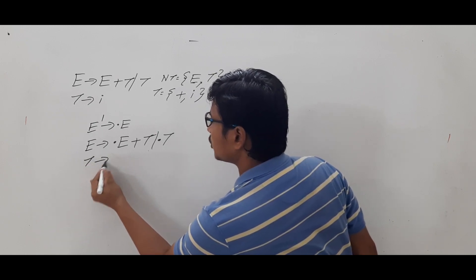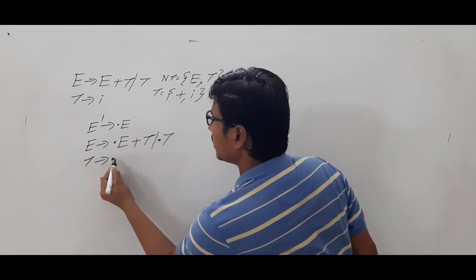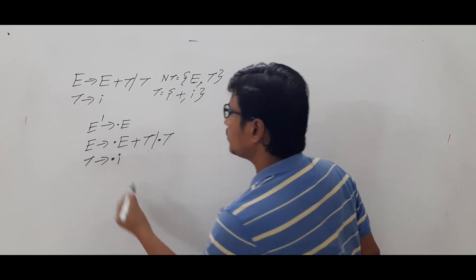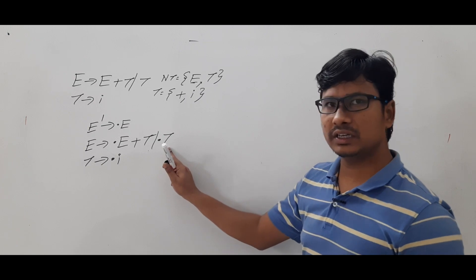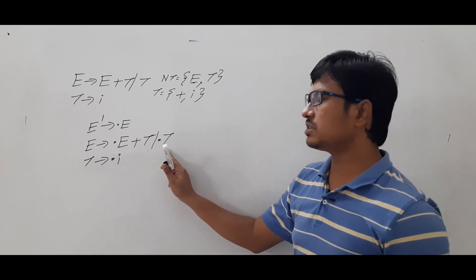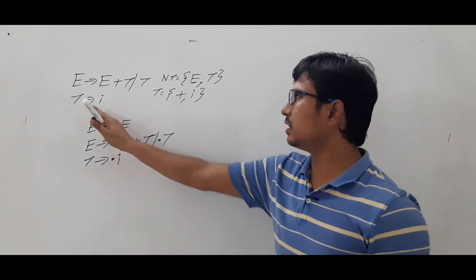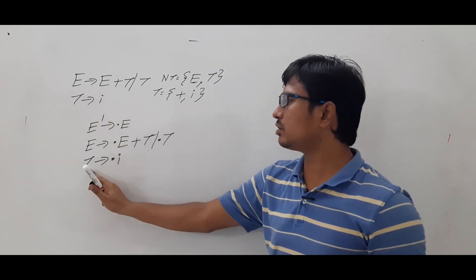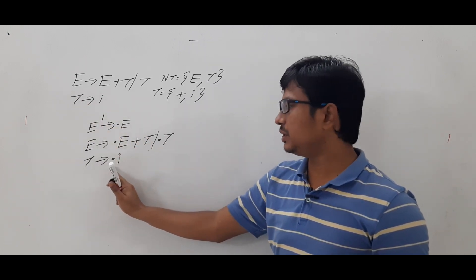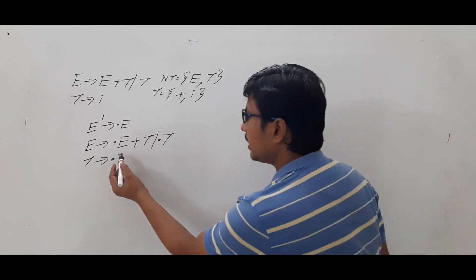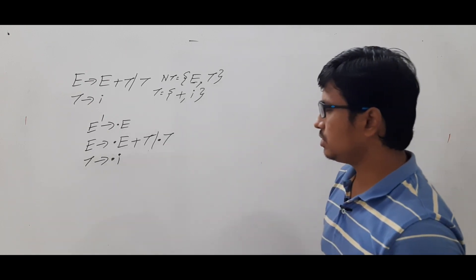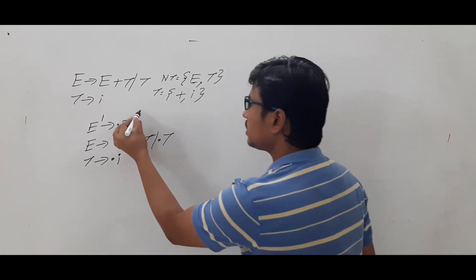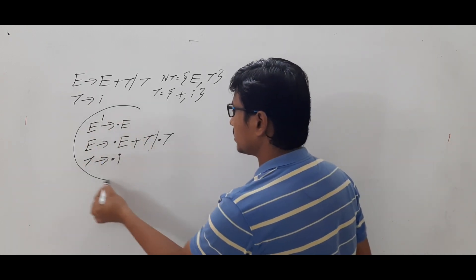Another important point: T → •i will also come in the closure. Why? Because you have dot T, which is a non-terminal. If it is a non-terminal, you need to write its production and keep a dot in front of it: T → •i. So this completes our I₀.